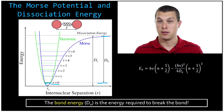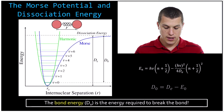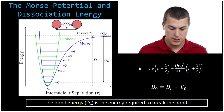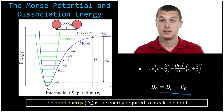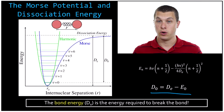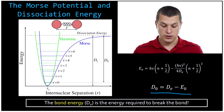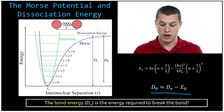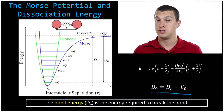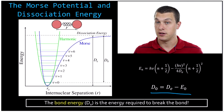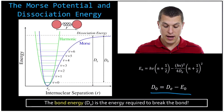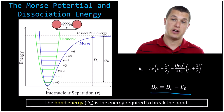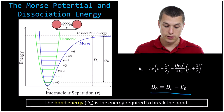D sub O is called the bond energy — basically how hard it is to split apart the molecule. That's different from the dissociation energy because our molecule can never be at zero energy; it's always at the zero state. The bond energy is just equal to the dissociation energy minus the zero point energy, or the energy of that ground state. You take the dissociation energy, subtract the energy of the n equals zero state, and you get the bond energy — how much energy you'd have to put in to pull those two atoms apart.